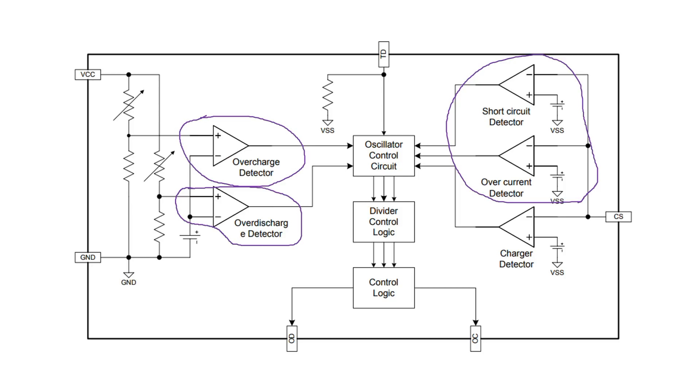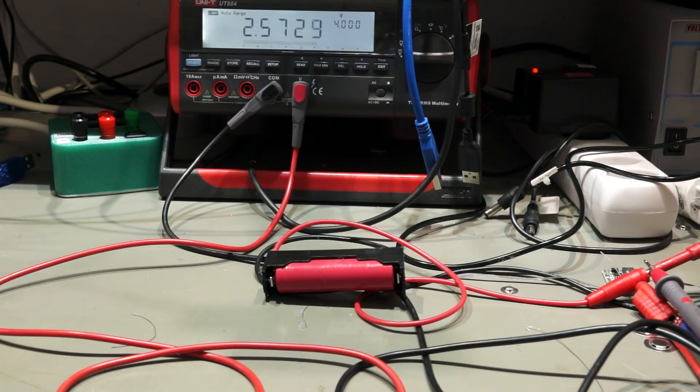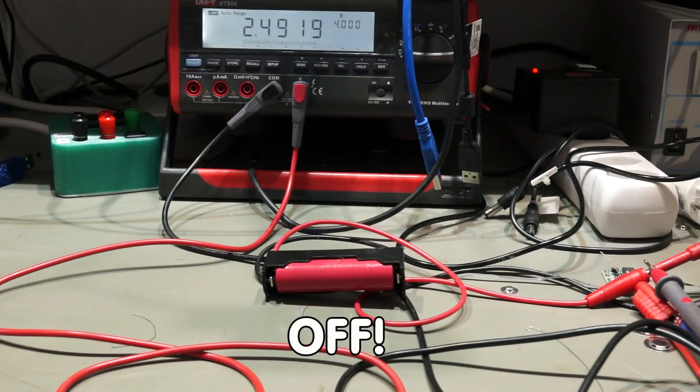Then we need a circuitry to make sure these signals do not start to oscillate. One example of such an oscillation could happen like that. If you discharge a battery, its cell voltage reaches 2.5 volts. Then the over-discharge comparator would disconnect the load. If you disconnect the load, the cell voltage immediately increases to above 2.5 volts. And of course, the comparator would immediately switch the load on again. And the circle would continue over and over.